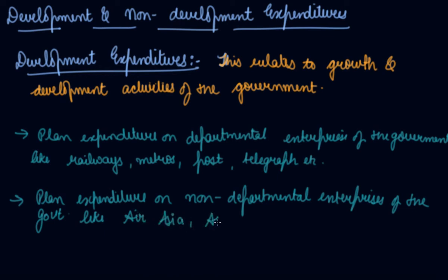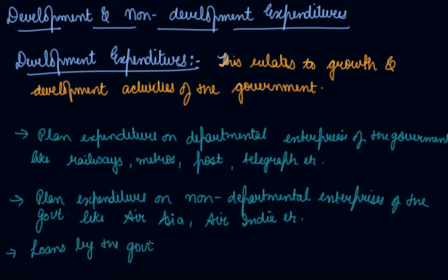Non-departmental enterprises include partly government-owned entities like Air India. The third category covers loans given by the government to non-departmental enterprises. These all constitute your development expenditures.